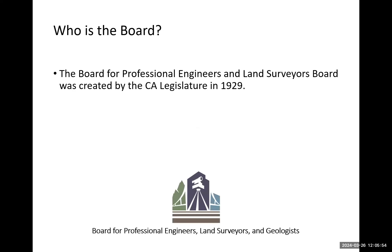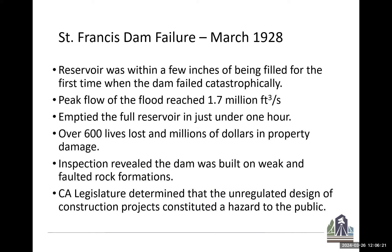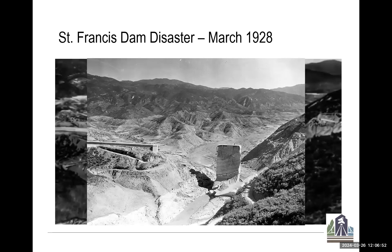So who is the board? Well, it started as the Board of Professional Engineers in 1929. Why 1929? Well, in 1928, there was a large dam being finished up. There were no records of geologic investigations at the dam site, so you know there's going to be problems. Within a few minutes of the dam being completely filled, it failed catastrophically. It emptied the reservoir in under an hour, with loss of lives and all kinds of damage. So the legislature determined it was necessary to start licensing these folks. Here's kind of what it looked like an hour after — pretty amazing — and that's how the board came to be.